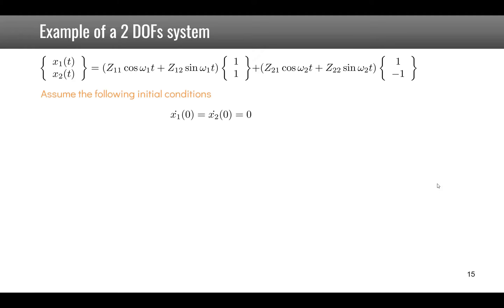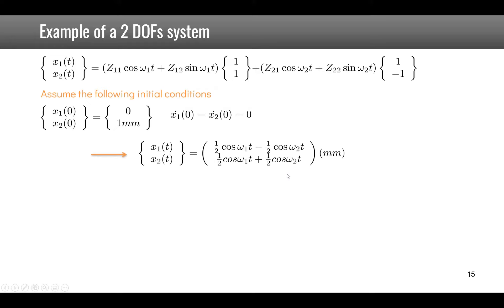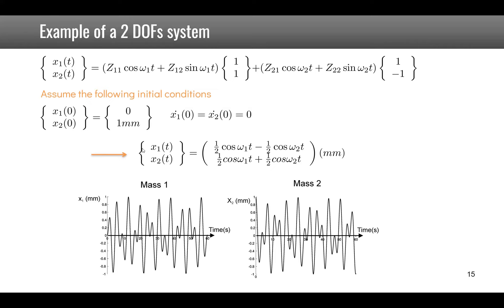To compute the free response, it is a combination of time functions at the different frequencies: omega_1 and omega_2, each with cosine and sine contributions multiplied by the respective mode shapes. Assuming the two masses start at rest with zero velocity, and imposing a displacement of 1 mm on mass 2 while mass 1 is fixed, we can solve to find x1 and x2 as functions of time.